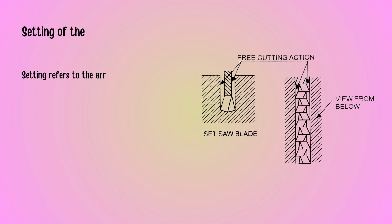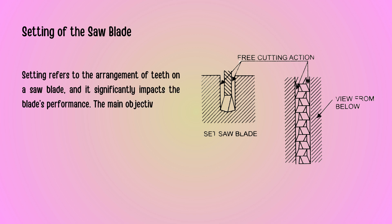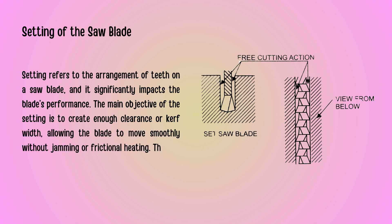Let's discuss the setting of a saw blade. Setting refers to how the teeth of the saw blade are arranged. It's crucial because it determines the blade's performance by creating enough space, known as the curve, to allow smooth movement without jamming or overheating.